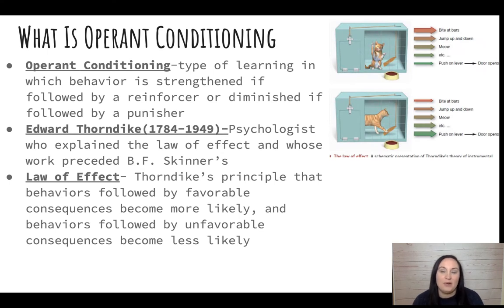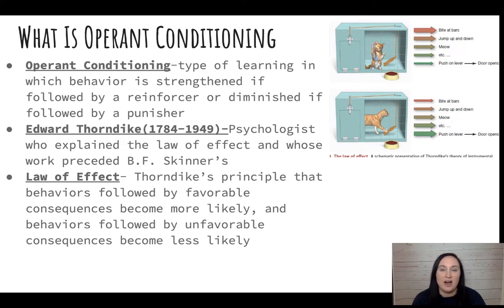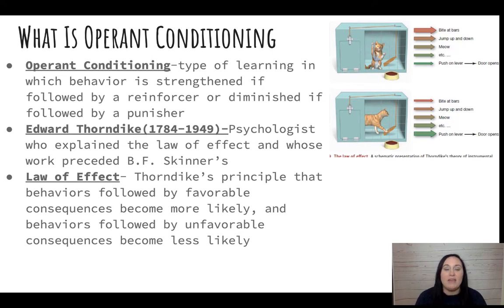So what is operant conditioning? This is a type of learning in which behavior is strengthened if it's followed by a reinforcer, or decreased if it's followed by a punisher. Edward Thorndike played an important role in the early works of operant conditioning. He was a psychologist who explained the law of effect — the idea that behaviors followed by favorable consequences become more likely, and behaviors followed by unfavorable consequences become less likely.